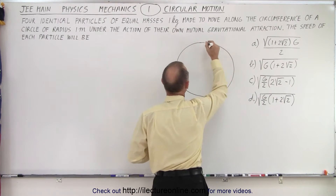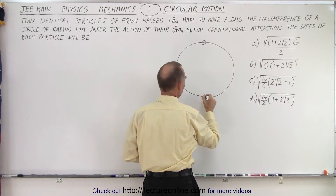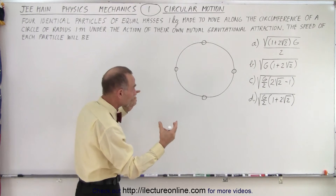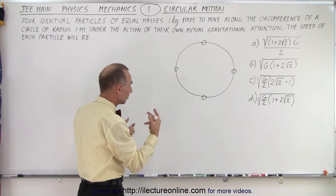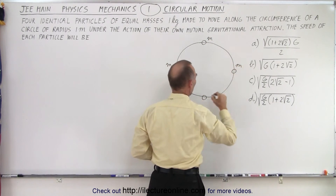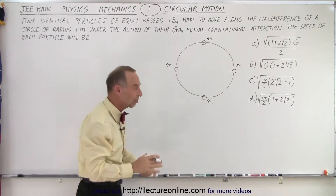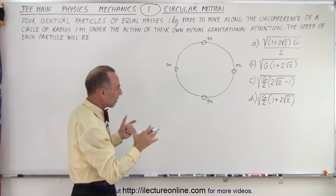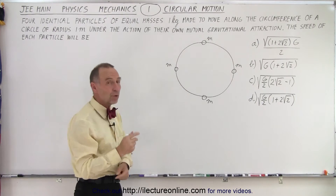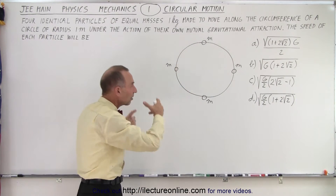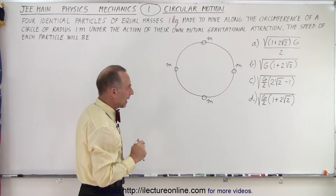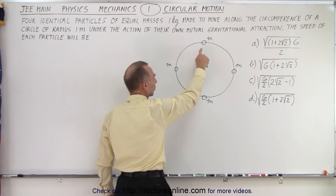We have four equal particles of equal mass traveling around a circular path. Let's assume they're equidistant, because they would be attracting each other with the same amount of force — they're masses, not charges — so each has the same mass, meaning there would be an equal amount of attraction, which would cause the four particles to be equal distance from one another. Now, why would they be moving in the first place? If we simply put four particles there, nothing is going to move. So once they're given a velocity, at what velocity would they be going around in a circle due to their own gravitational attraction?